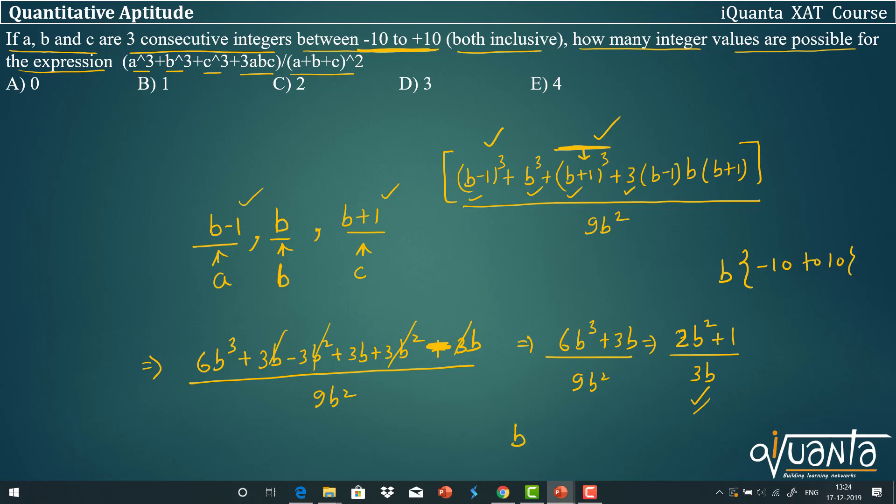You will come to know that only B = 1 will give an integer value, as well as B = -1 will also give an integer value, because very clearly in the denominator we should have a multiple of 3. So in the numerator as well, we should have a multiple of 3, and it becomes only when B = 1 and -1.